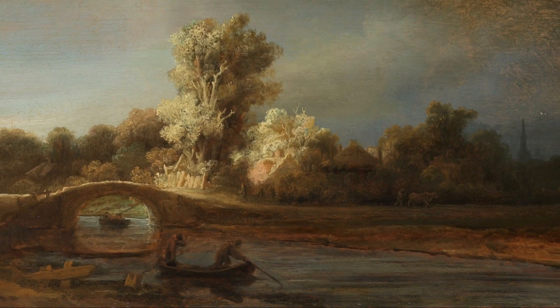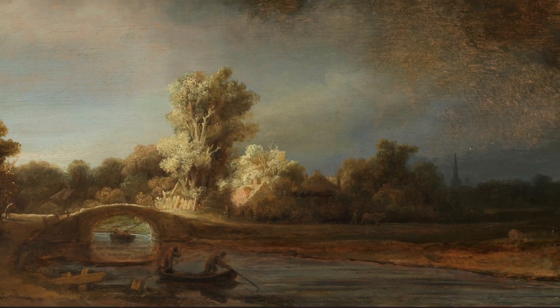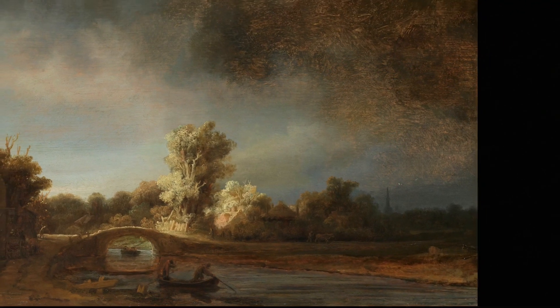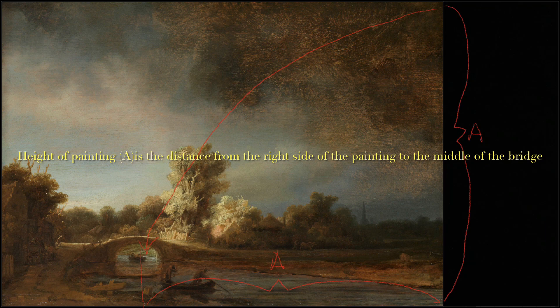One of the things I think makes these paintings visually resonant is the way Rembrandt uses the proportions of the painting to place things inside it. For example, if we take the height of this painting and drop it down from the right side, it comes right to the middle of that bridge, which is sort of the main event in the landscape, along with the light on those trees. Rembrandt does this a lot — taking a proportion of a painting and using it at a 90-degree angle to place something.